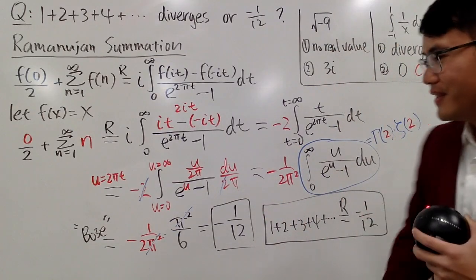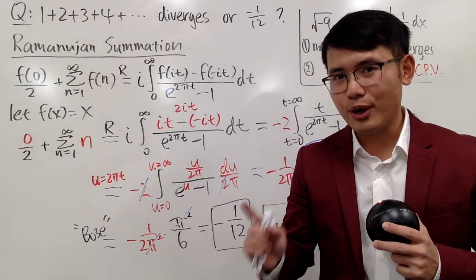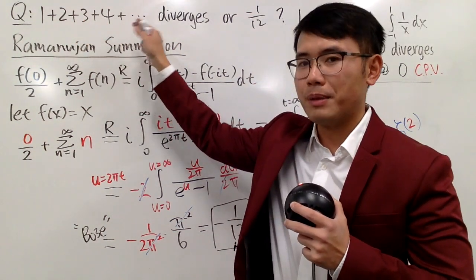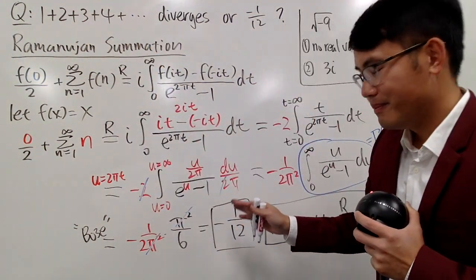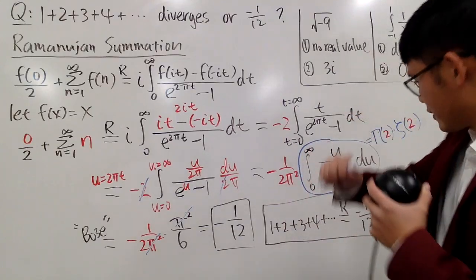But, once you get into some upper division level math classes, once you learn about what they call the Cauchy Principle Value, you can say this is equal to 0, and once again, this is the Cauchy Principle Value. So, as you can see, we have done this twice before, and this time we may be able to add this to this. We have two ways to answer the question depending on which class that you are in. So, hopefully you all like this video, and leave a comment down below and let me know if you have any questions. And be sure you watch my next video because I'll show you how we can make 1 plus 2 plus 3 plus 4 plus dot dot dot equal to negative something else. Anyway, as always, that's it.